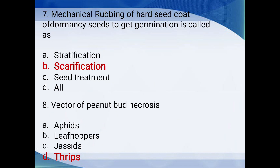Mechanical rubbing of the hard seed coat of dormant seeds to get germination is called: stratification, scarification, seed treatment, or all of the above? The answer is scarification — where a hard seed coat is rubbed against a hard surface to break dormancy and promote germination.